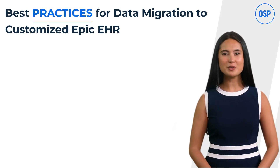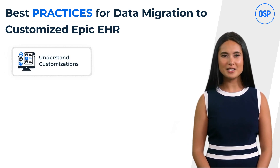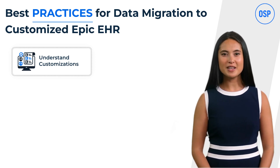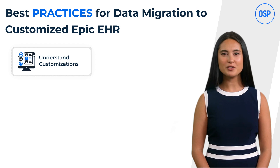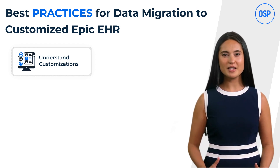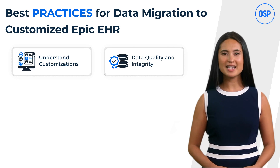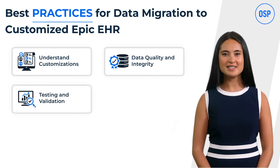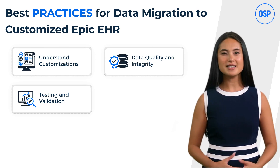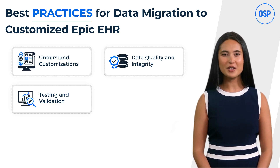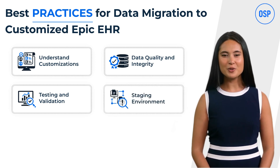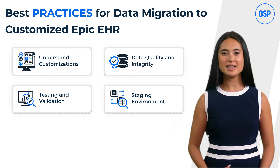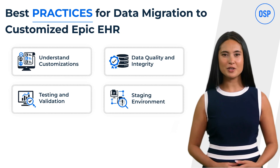Best practices for data migration to a customized Epic EHR include: understanding customizations — Epic EHR systems are often customized to meet specific organizational needs, so review all custom fields and workflows to ensure they are accounted for in the migration plan. Maintain data quality and integrity by cleansing data to remove duplicates, correct errors, and standardize formats. Thoroughly test the migration process before full-scale execution, performing test migrations to validate accuracy and completeness. Use a staging environment to identify and resolve issues in a controlled setting, ensuring minimal disruption to ongoing operations.